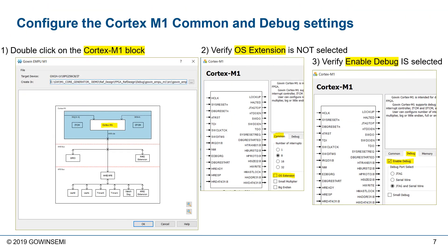We're ready to configure the Cortex M1 common and debug settings. Simply double-click on the Cortex M1 block to bring up the common settings. Verify that the OS extension is not selected. Then on the Debug tab, make sure that Enable Debug is selected.